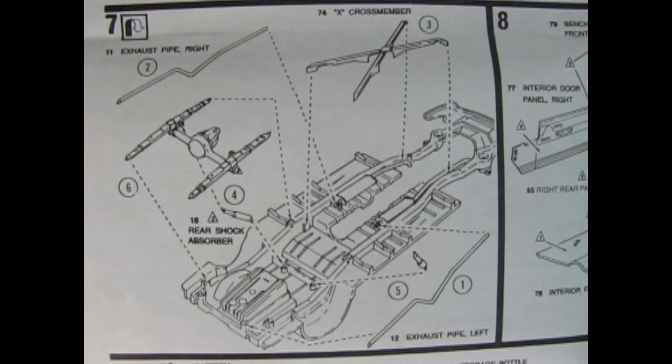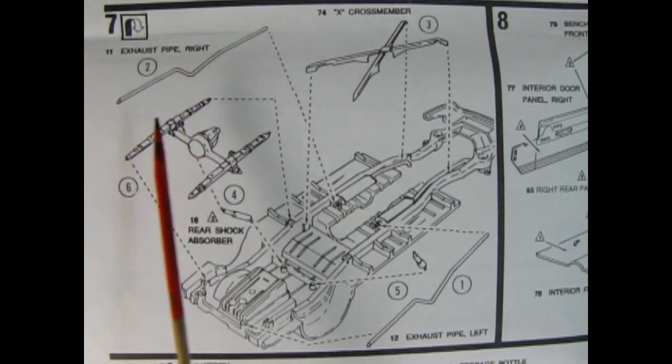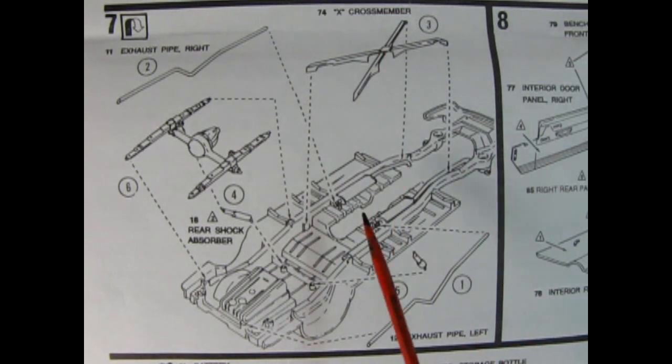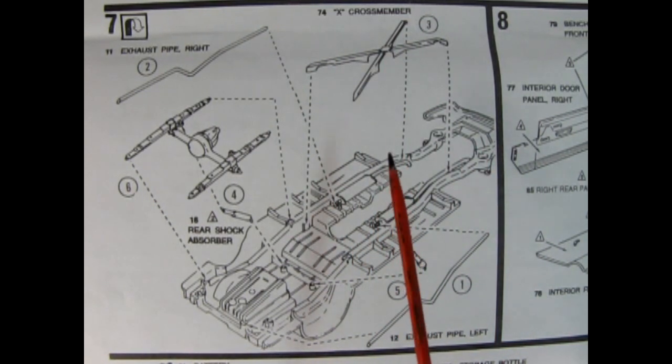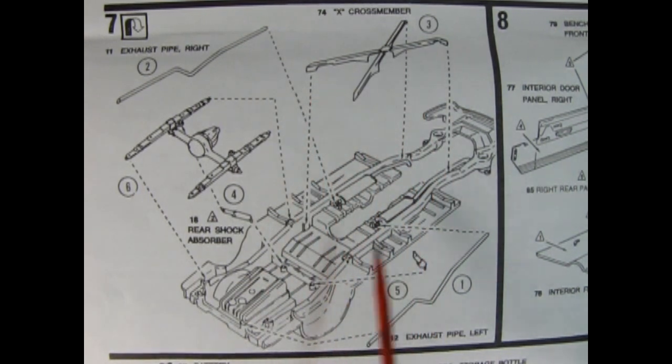Panel seven shows the completion of our chassis with the rear axle being dropped into place and the shock absorbers get glued on underneath. Then we've got our exhaust pipe right and left and this special cross member that was on convertibles because they didn't have the roof so there was no support, so they had to strengthen that by using the cross member.